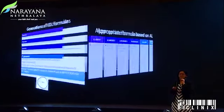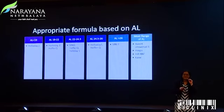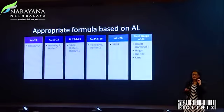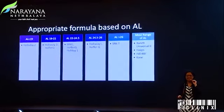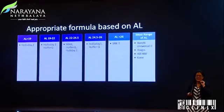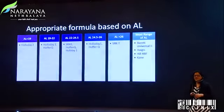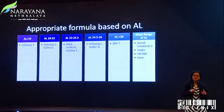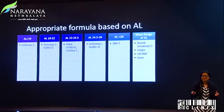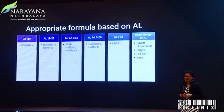The effective lens position prediction was the game changer. Based on axial length, it is very safe to say that Barrett Universal 2 is now perhaps the most universally accepted formula across all axial lengths — very popular, giving very good results — including Haigis, Hill-RBF, and the Melbourne-Kane formulas.